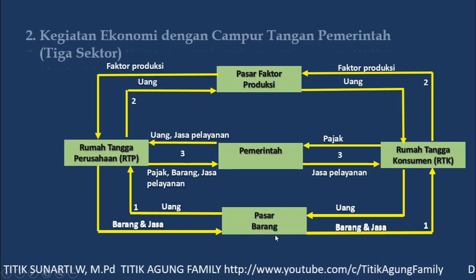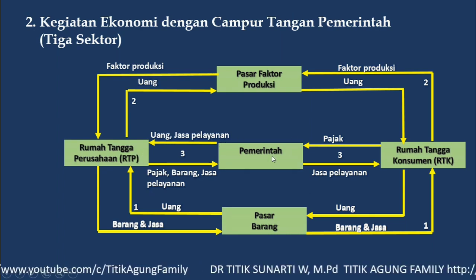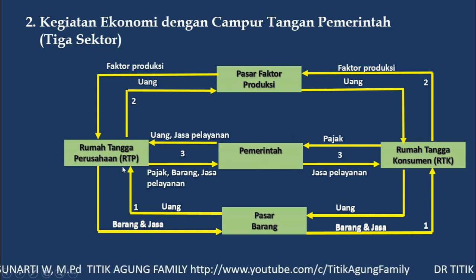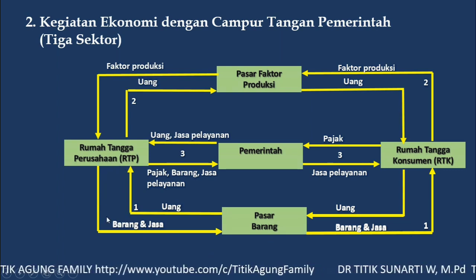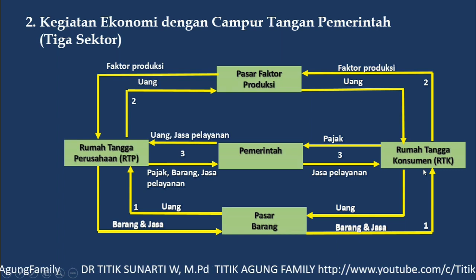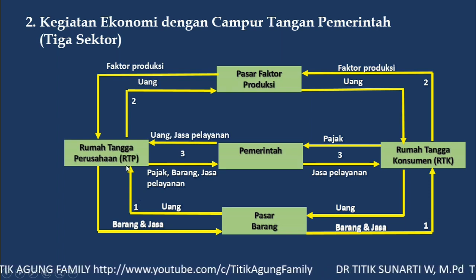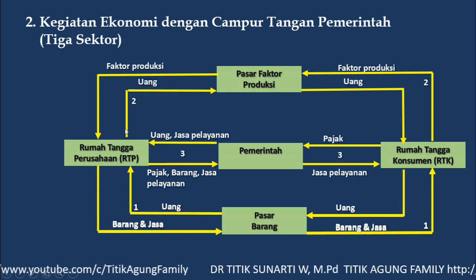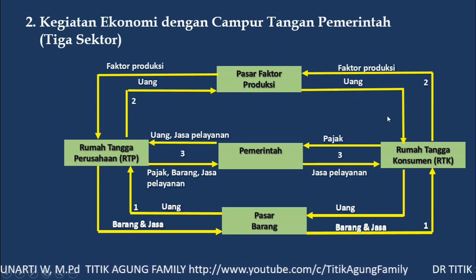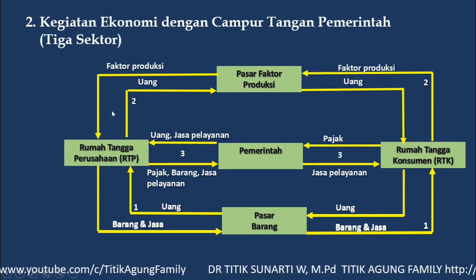Yang kedua adalah kegiatan ekonomi dengan campur tangan pemerintah atau tiga sektor, yaitu rumah tangga produsen, rumah tangga pemerintah, dan rumah tangga konsumen. Kita lihat alur yang pertama: rumah tangga perusahaan atau produsen menjual barang dan jasa melalui pasar barang dan dibeli oleh rumah tangga konsumen. Rumah tangga konsumen membayar dalam bentuk uang kepada rumah tangga produsen. Alur yang kedua, rumah tangga produsen membayar uang atas faktor produksi yang dibelinya dari rumah tangga konsumen. Jadi rumah tangga konsumen menjual faktor produksi kepada rumah tangga produsen.